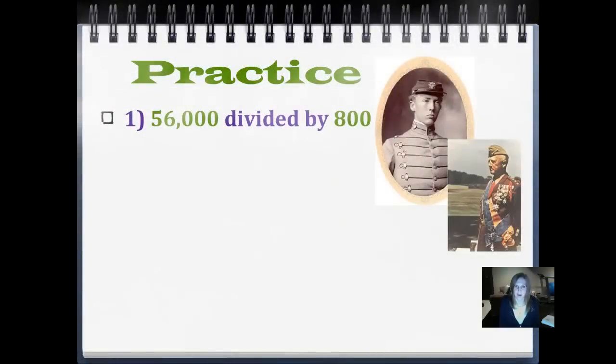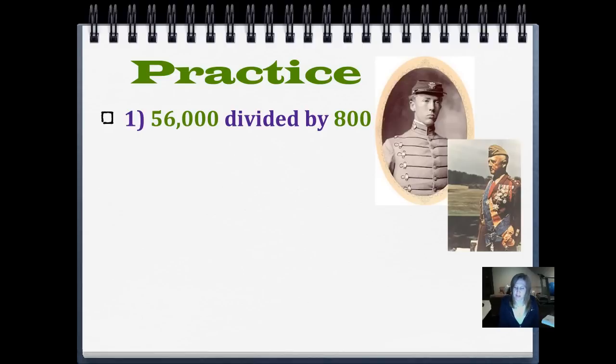So here is our first practice problem. 56,000 divided by 800. Write that down in your journal and use the Battle of the Zeros strategy to figure it out. Push play when you are ready.